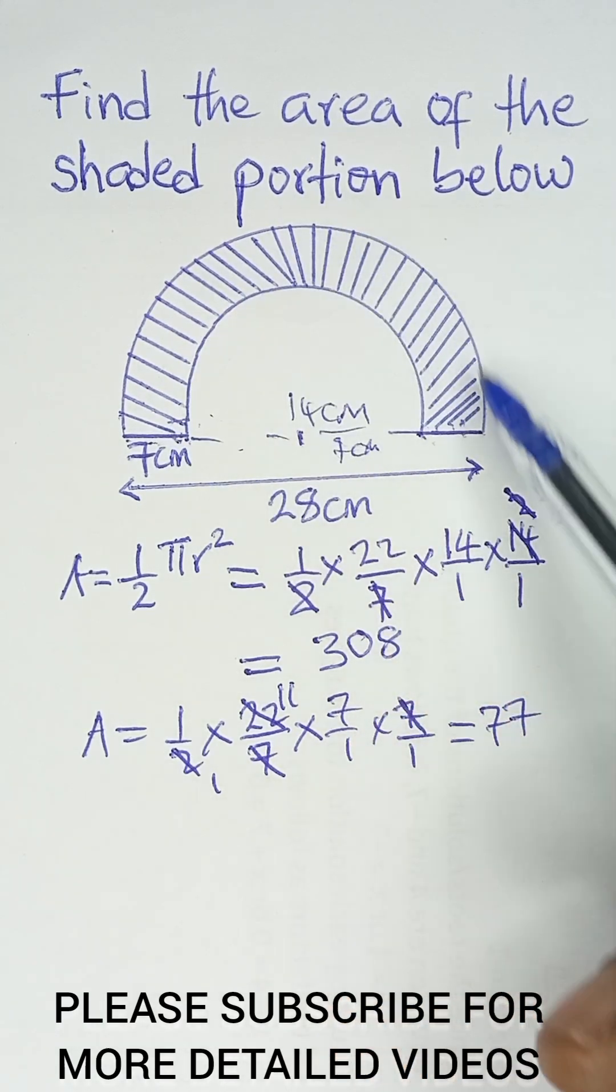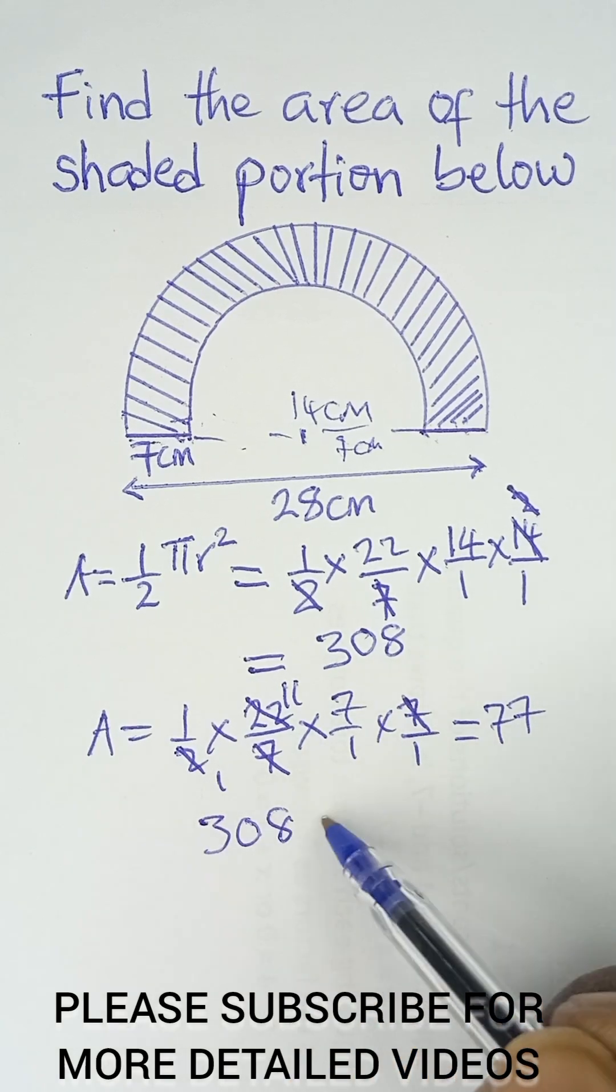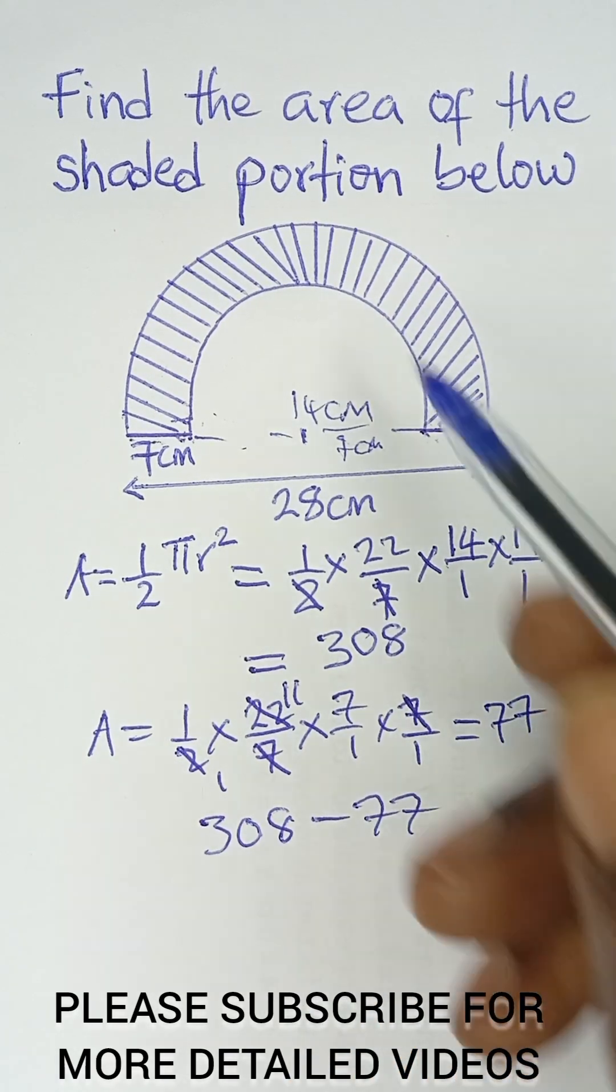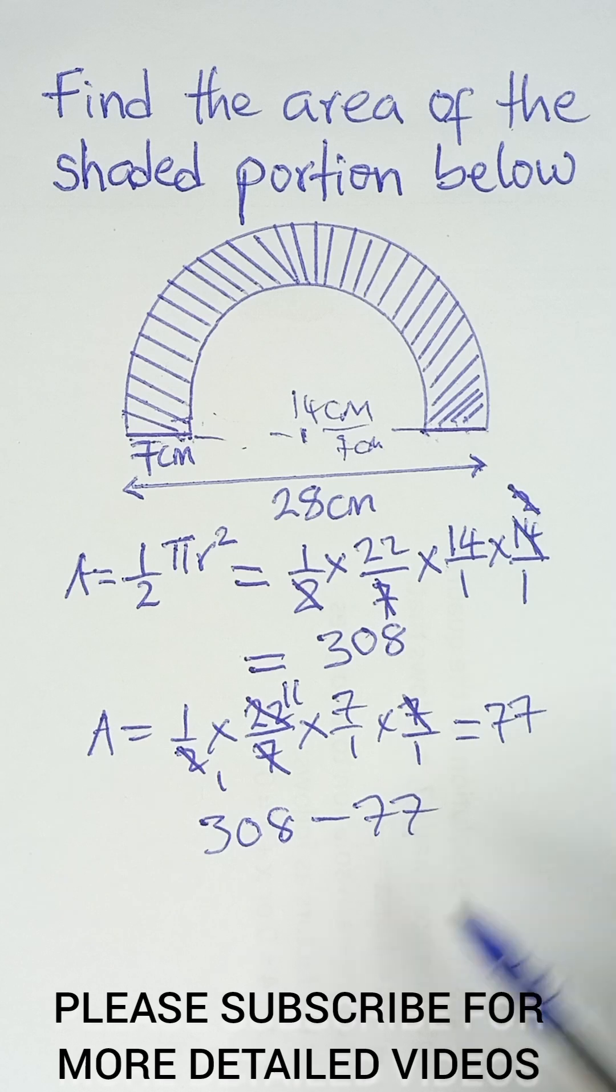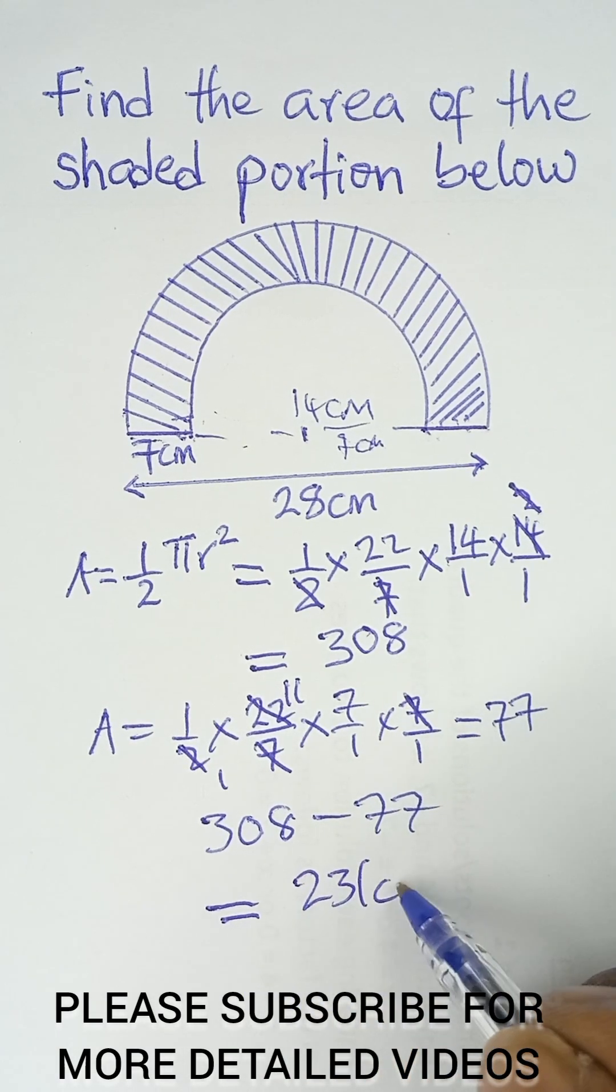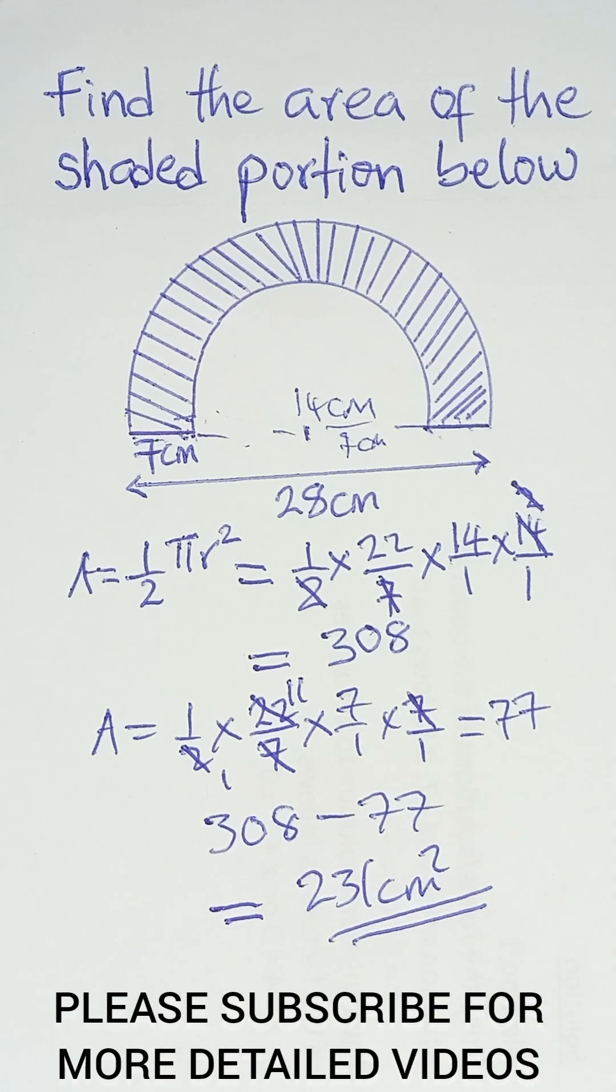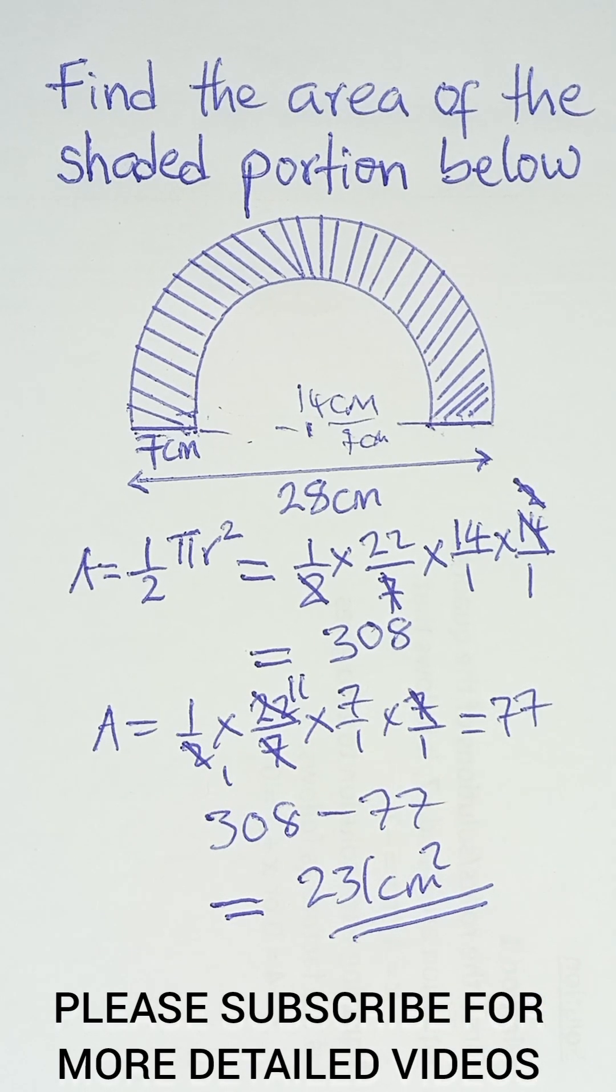So now the area of this shaded portion will be 308 minus 77. That is the full circle minus this smaller one. And that will give us 231 centimeters squared as the final answer. So please subscribe to this channel for more videos like this. Thank you.